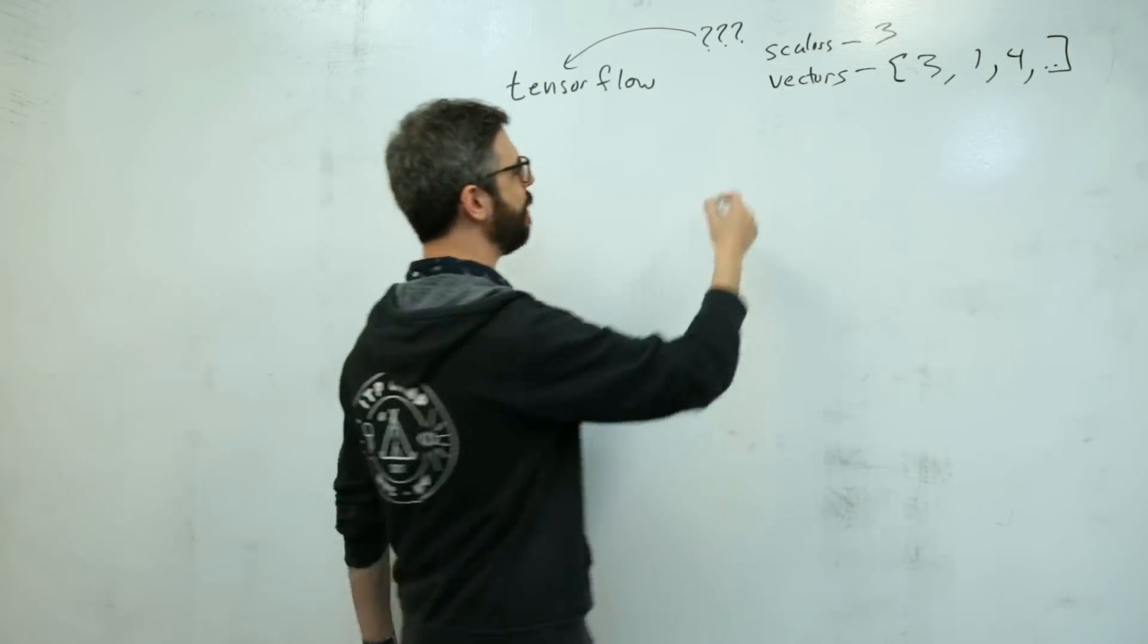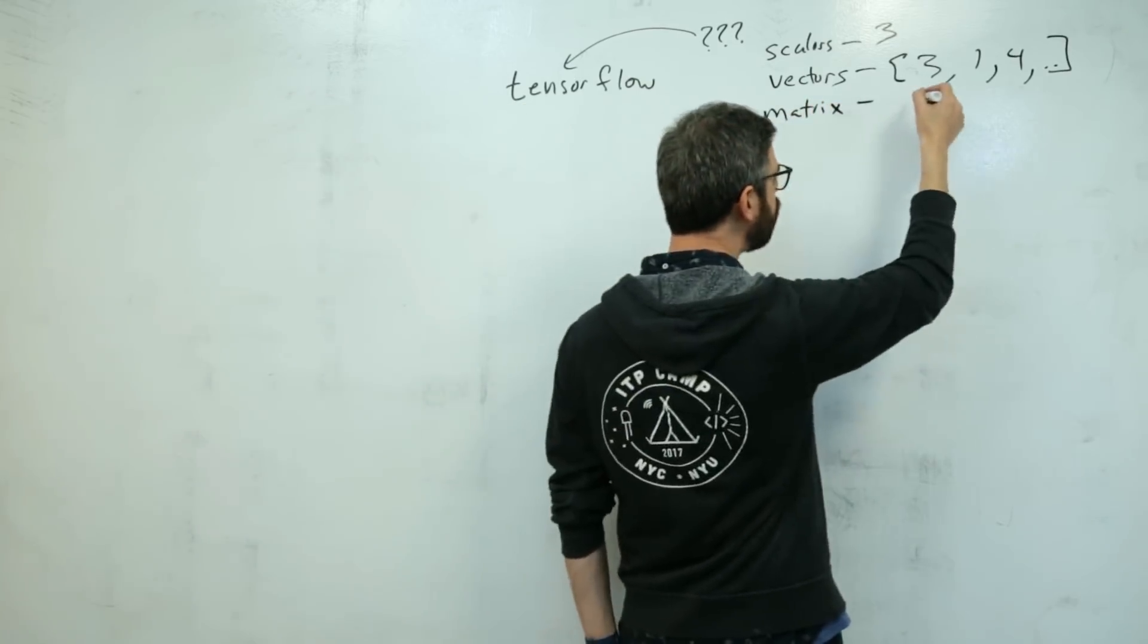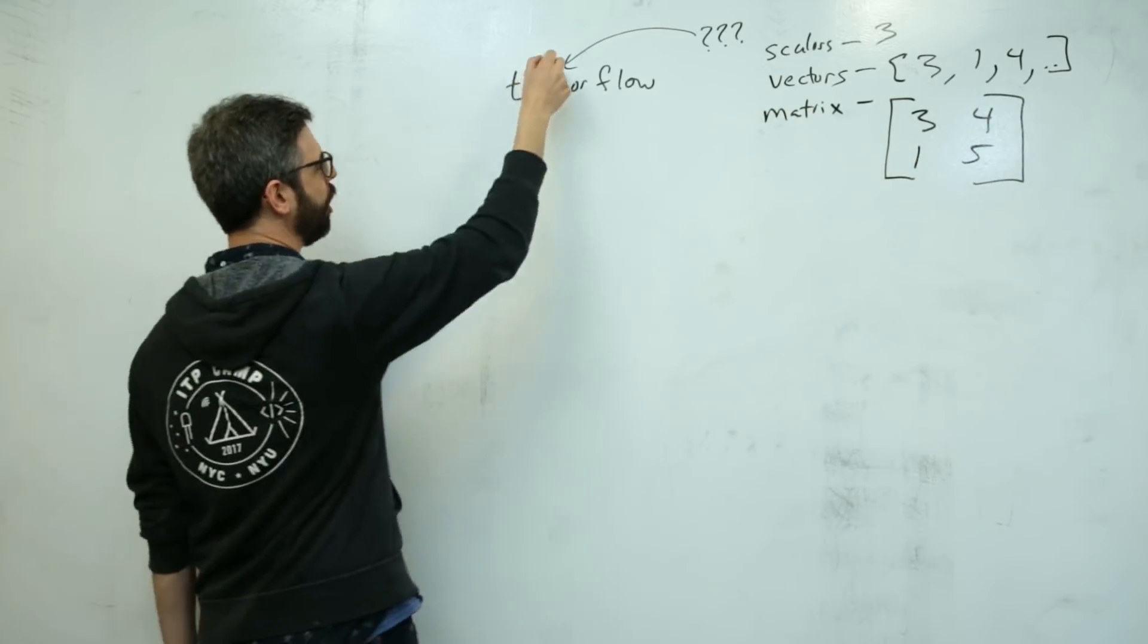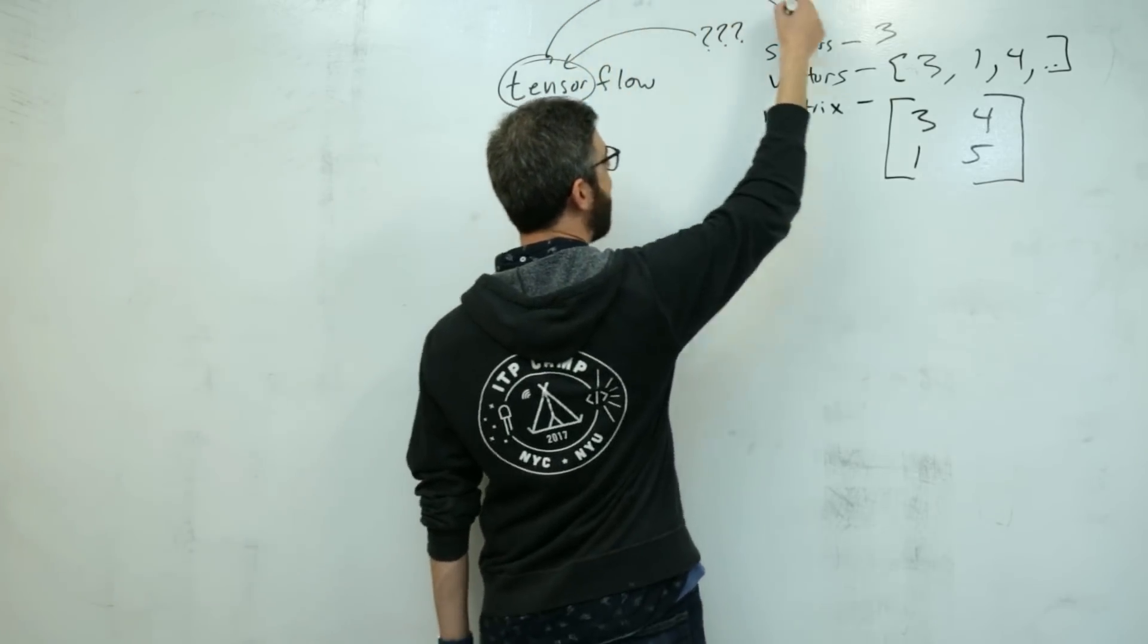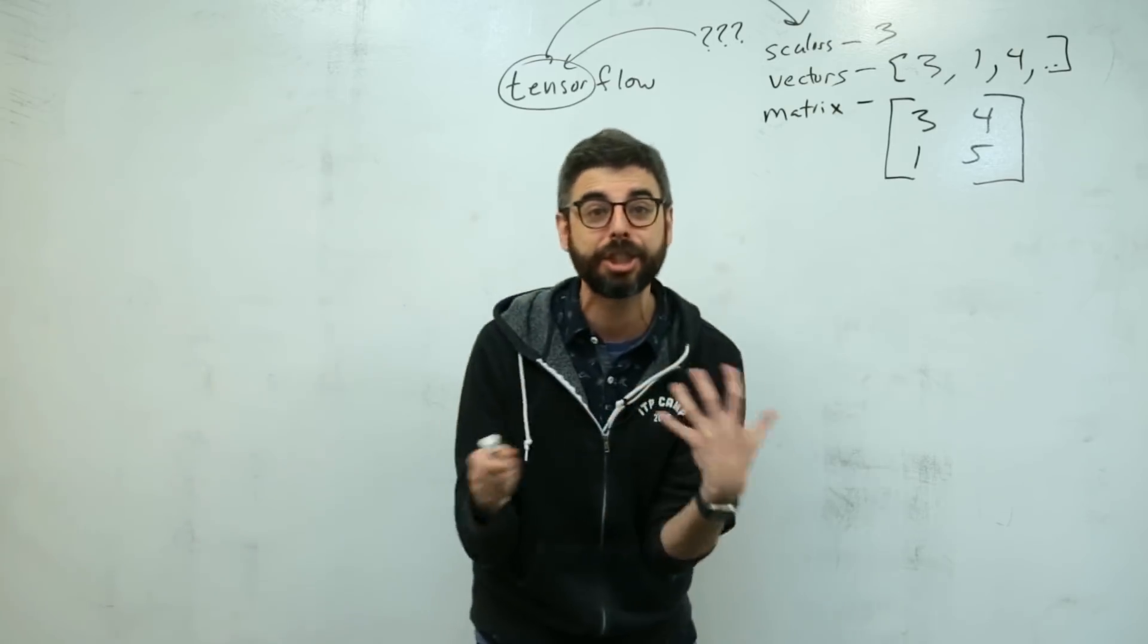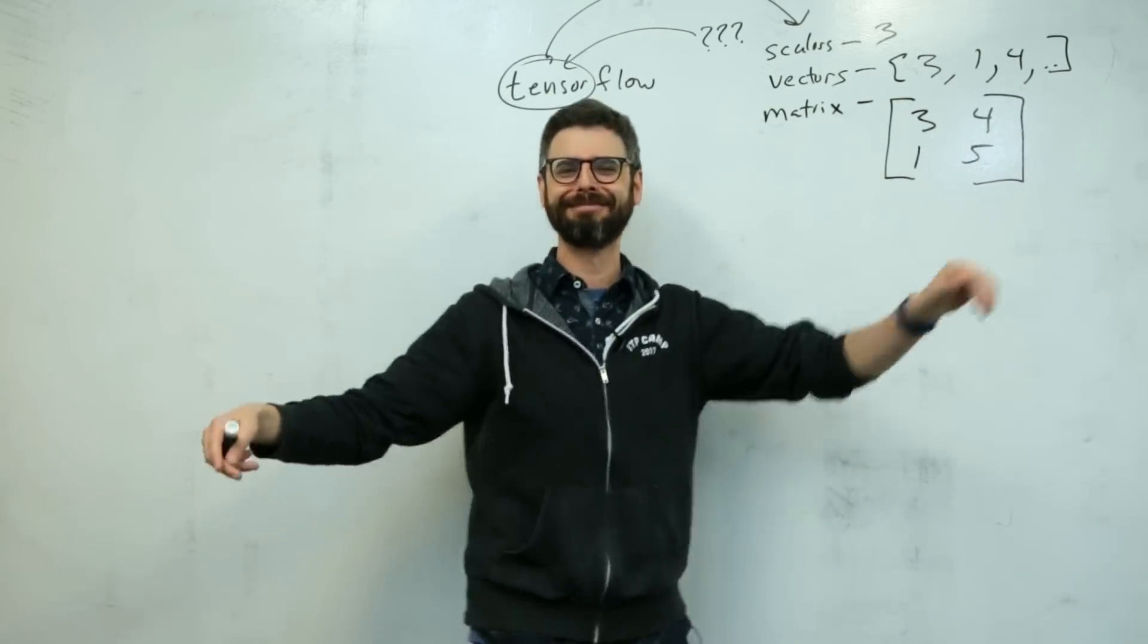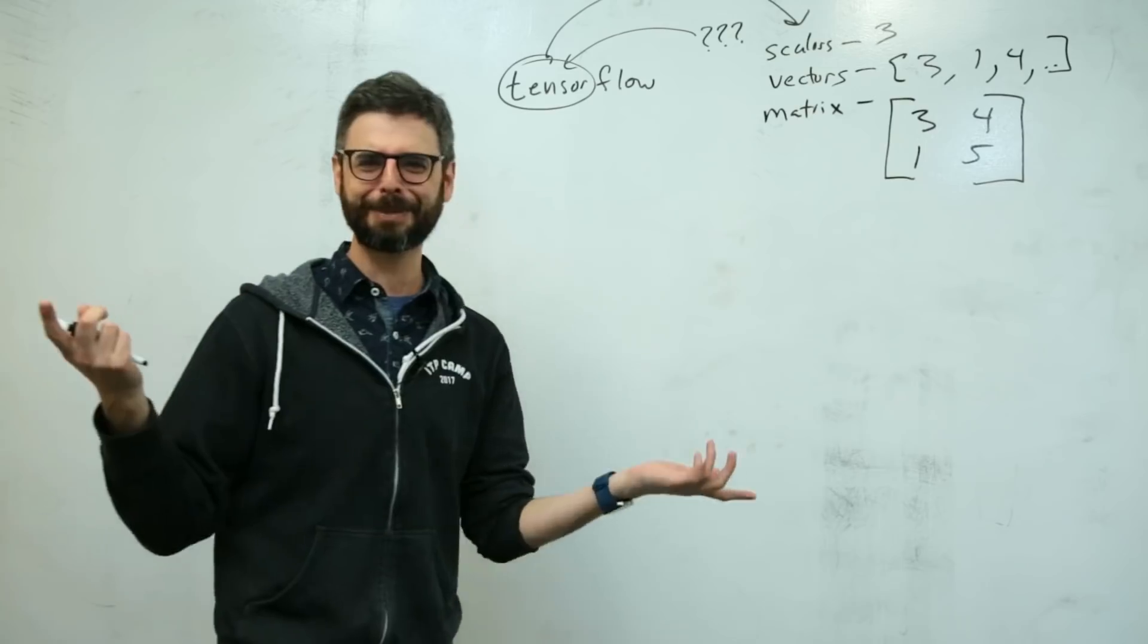We've been referring to things as vectors. We have scalars, which is like a single number, like three. We have this idea of vectors, which is a list of numbers, like three, one, four, et cetera. And we also have this idea of a matrix or matrices, this idea of a matrix. A two-dimensional matrix might have a grid of numbers.